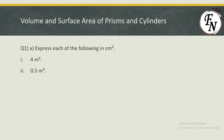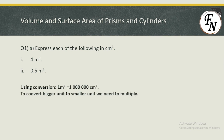Express each of the following in centimeter cube. Part one is 4 meter cube and part two is 0.5 meter cube, both to be converted into centimeter cubes. The conversion we will be using is that 1 meter cube equals 1,000,000 centimeter cube. Since meter cube is a bigger unit and centimeter cube is a smaller unit, we need to multiply.